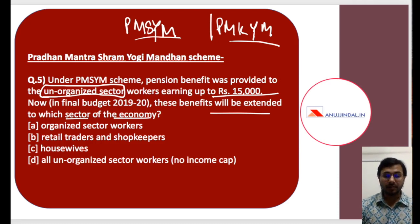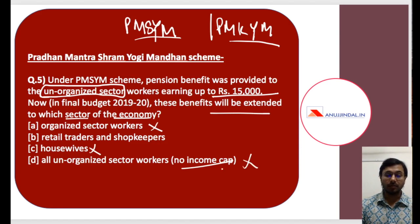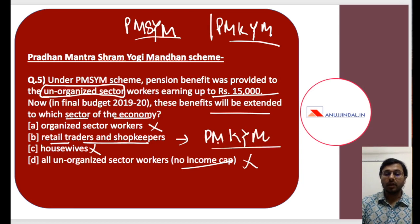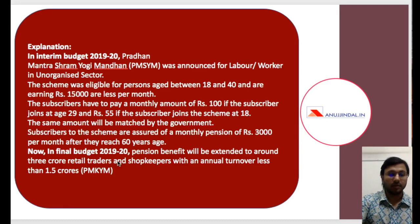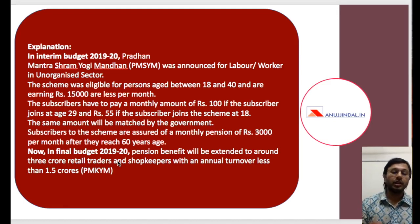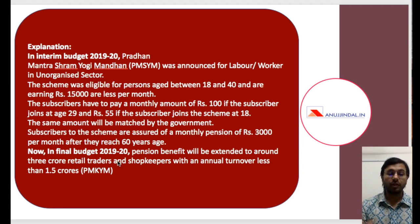The question asks which sector these benefits will also be extended to. Options include organized sector workers, housewives, all unorganized sector workers with no income cap, or retail traders and shopkeepers under Pradhan Mantri Karam Yogi Mandhan. The answer is retail traders and shopkeepers under Karam Yogi Mandhan, which is similar to Shram Yogi Mandhan. This question is deliberately a little confusing so that you understand that in examinations, questions demand you connect one scheme with another.